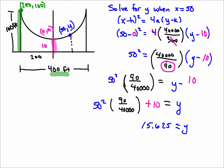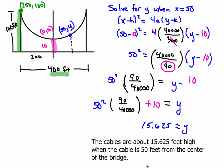But you're not done because the last thing that you have to do is actually answer the question. Now, what we wanted to do is write down a complete sentence. So you would say something like this: The cables are about 15.62 feet high when the cable is 50 feet from the center of the bridge. That's it for this problem. Thanks for watching, and we've got one more example to do, but we'll do that in the next video. We'll see you in the next video.